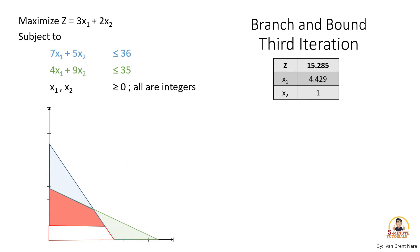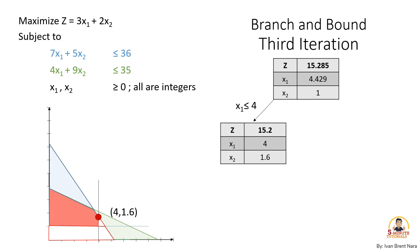For the third iteration, branch the problem by selecting an integer value for x1. On the left, we have x1 less than or equal to 4. The new values of the variables are x1 equals 4 and x2 equals 1.6. And on the right, we have x1 greater than or equal to 5. Graphing x1 greater than or equal to 5, we found out that this does not satisfy our first constraint. Therefore, at x1 greater than or equal to 5, the solution is infeasible. But there's still a non-integer value at x2 equals 1.6, so let's continue to the fourth iteration.